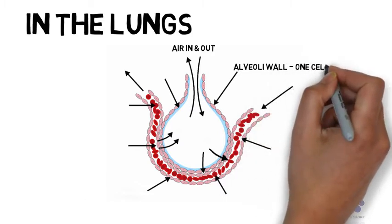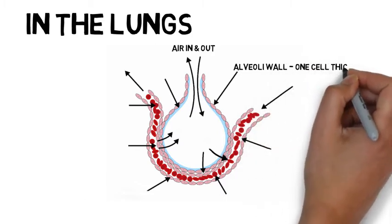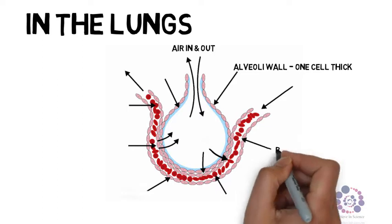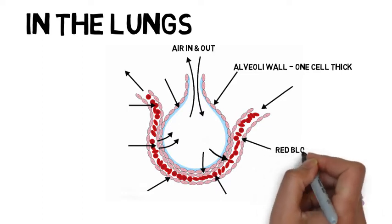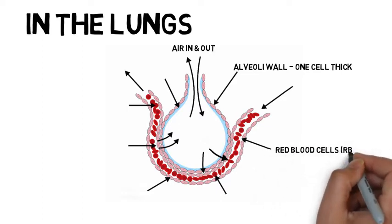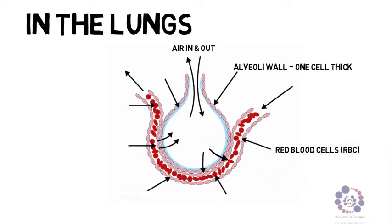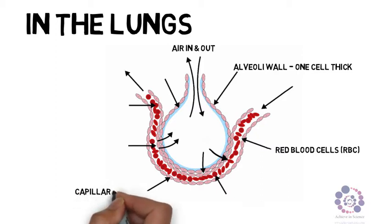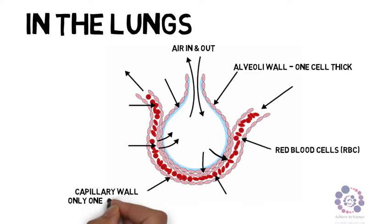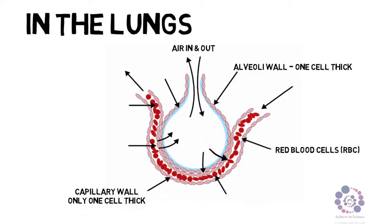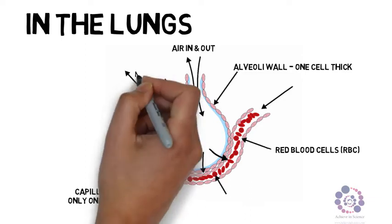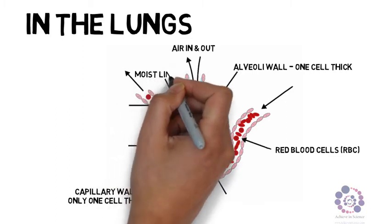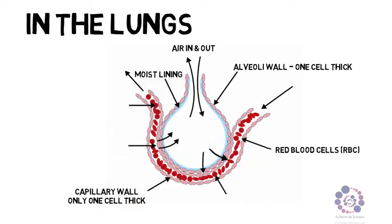The alveoli wall is one cell thick to allow diffusion over a short distance. Blood then flows around the outside of this alveoli. Red blood cells in particular are the ones that are going to pick up the oxygen. Around the outside of the alveoli is a capillary - again a one cell thick wall blood vessel. It is moist to allow the oxygen to diffuse.